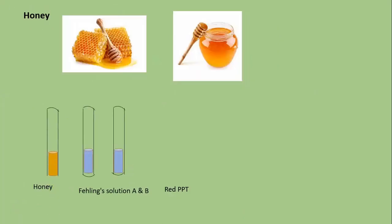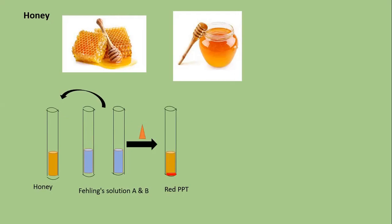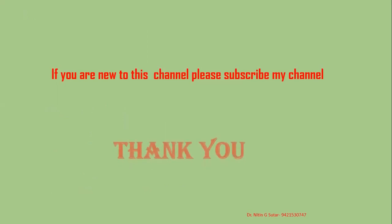The last drug is honey, which is obtained from flowers collected by honey bees Apis mellifera, belonging to the Bovidae family. For honey, Fehling's solution A and B are added and the mixture is heated — you get a red color precipitate. In this way, identification of drugs by chemical tests is completed. If you are new to this channel, please subscribe and like the videos. Thank you.